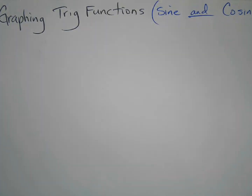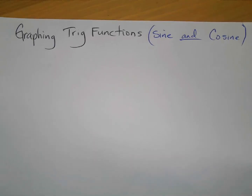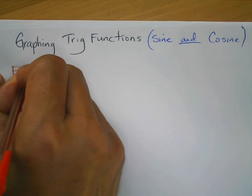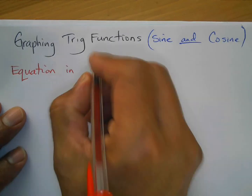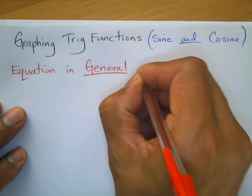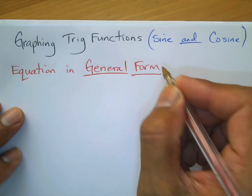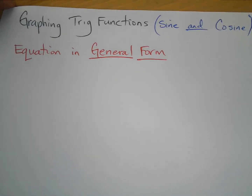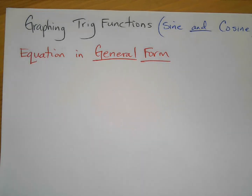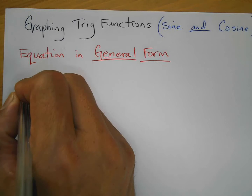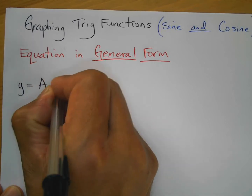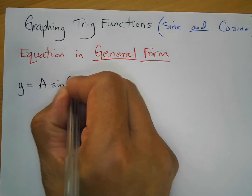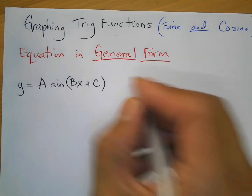Now you're going to see the whole general form of the equation. I'm going to write it twice — one for sine and one for cosine. Here's the equation in general form. A couple of these parts you're familiar with, and there are new parts being introduced. For sine, we have y equals a sine...